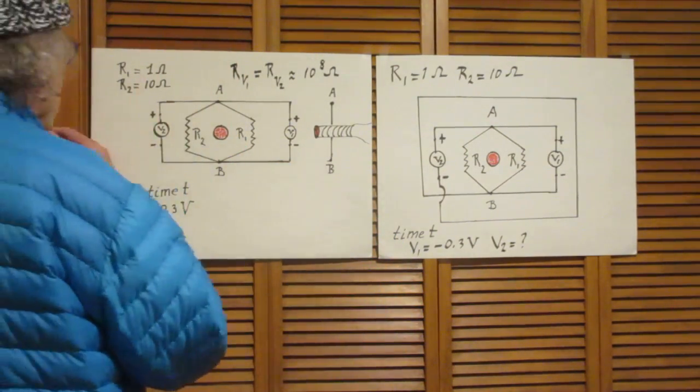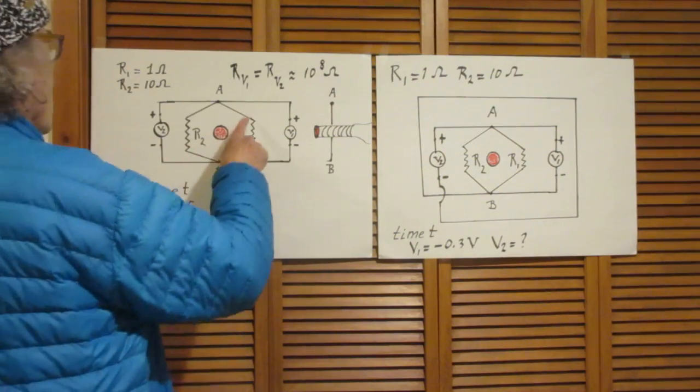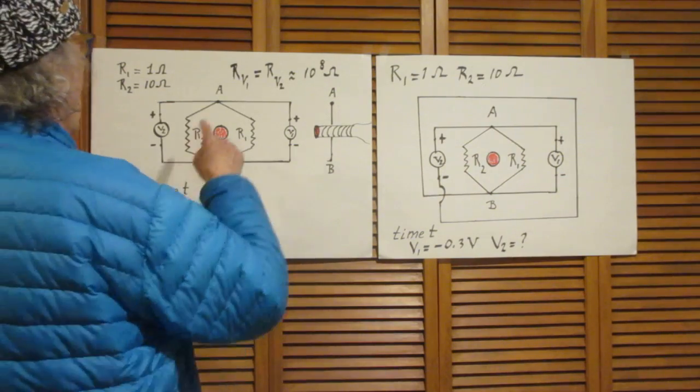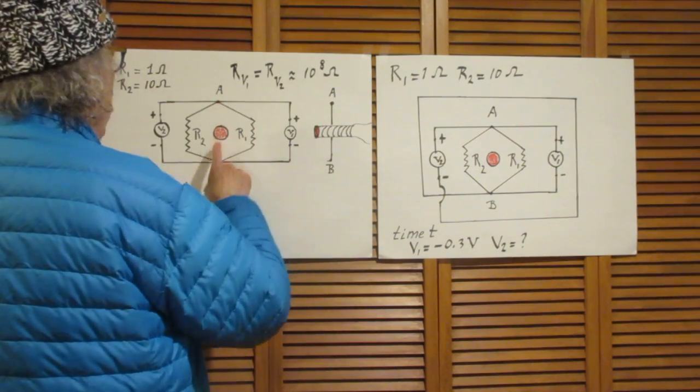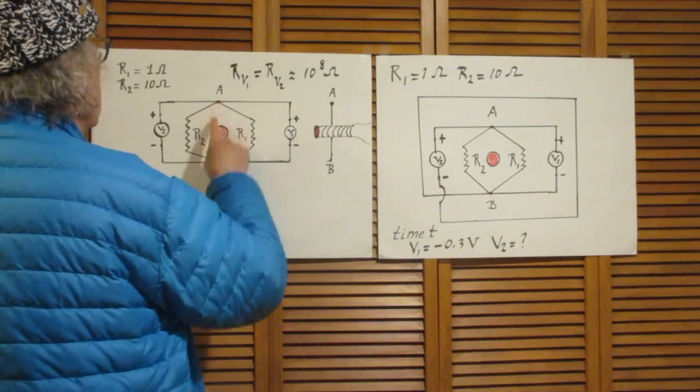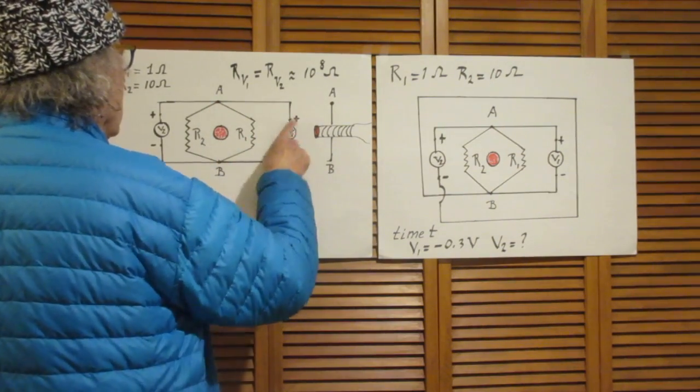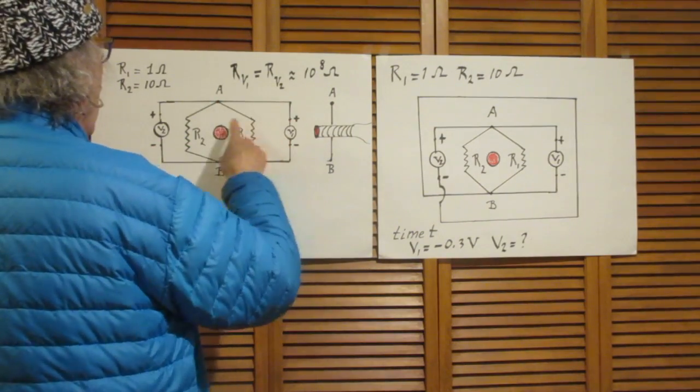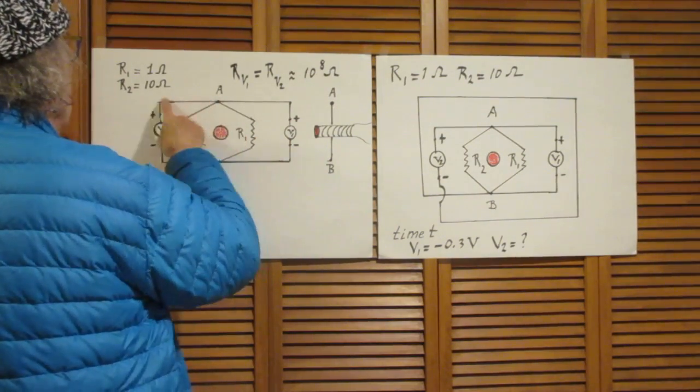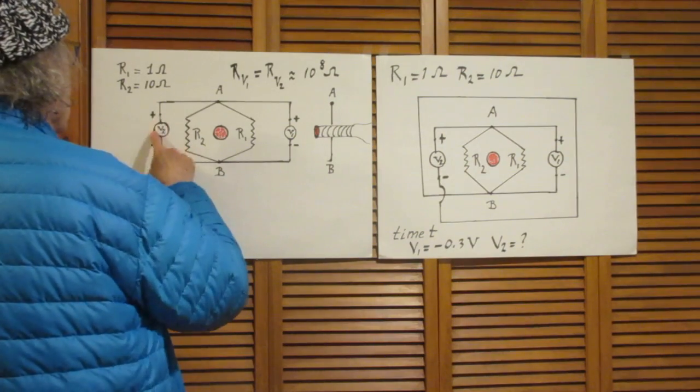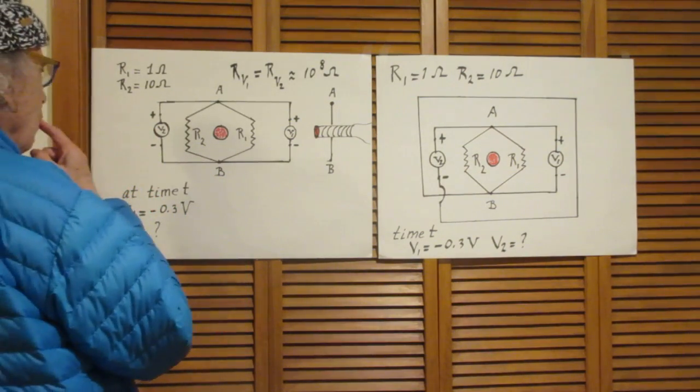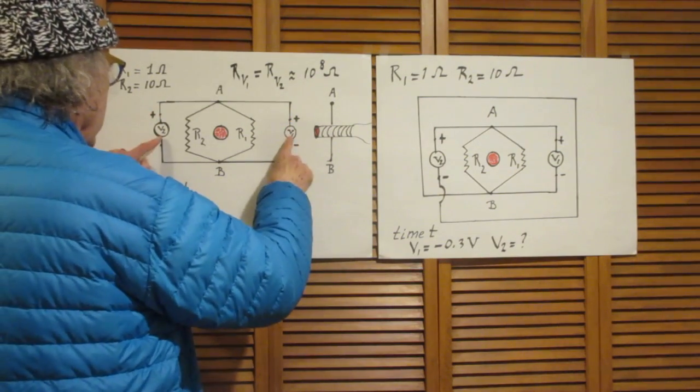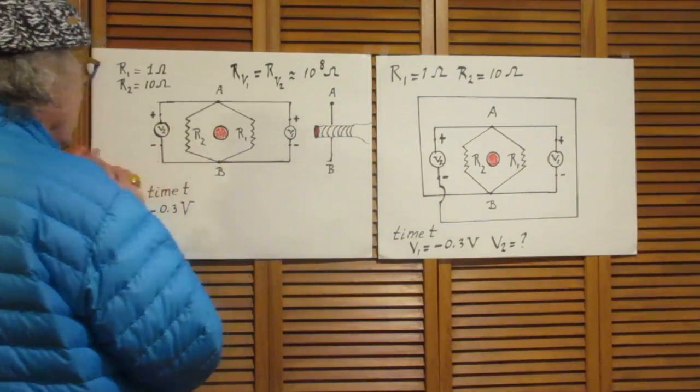Here is a circuit. Resistance R1, resistance R2. Between point A and point B is here a voltmeter V1, and here also taps to point A and B is a voltmeter V2. Both have their plus sides on the A side and their negative sides on the B side.